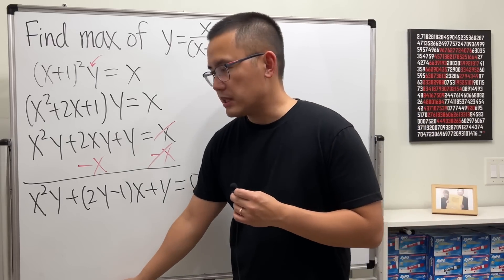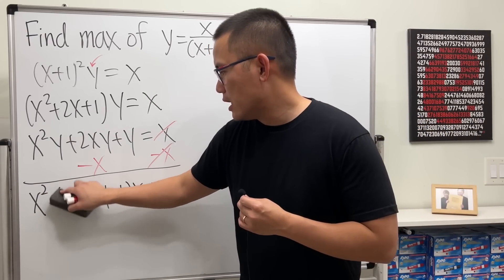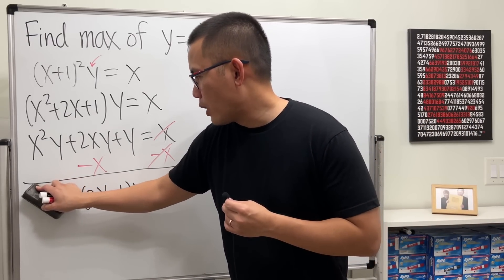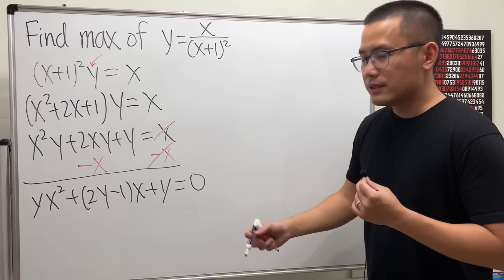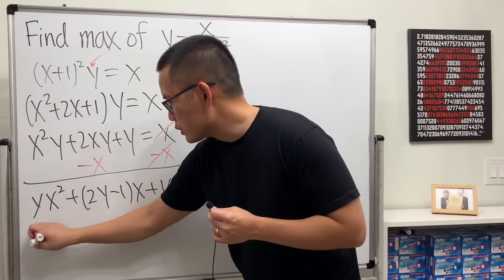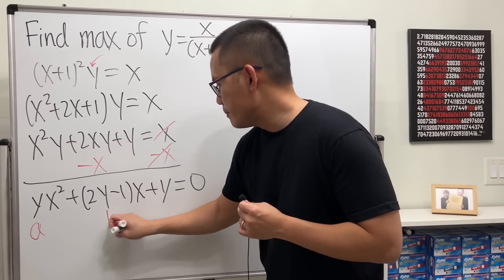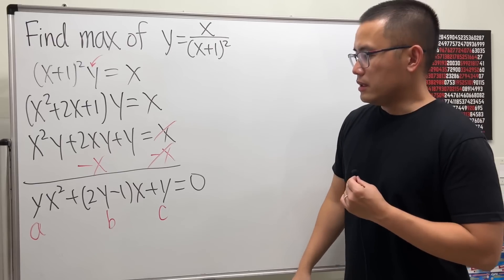And in fact, this is a quadratic equation in terms of x. So, perhaps, let me put the y in the front, and then x squared. Now, how does this look like? Of course, we have our typical a, b, and c in terms of y.